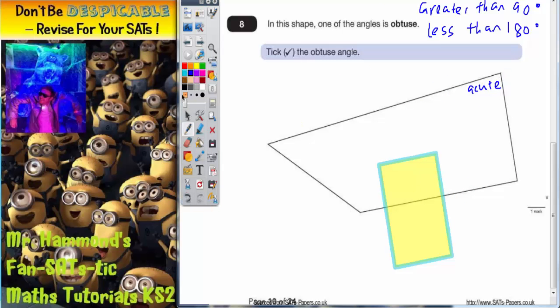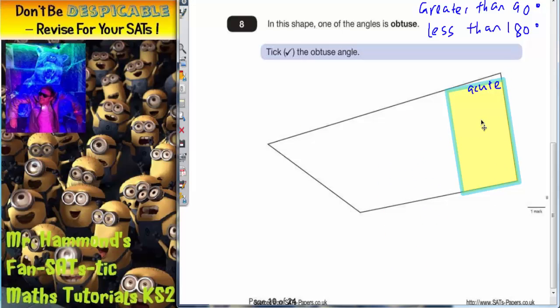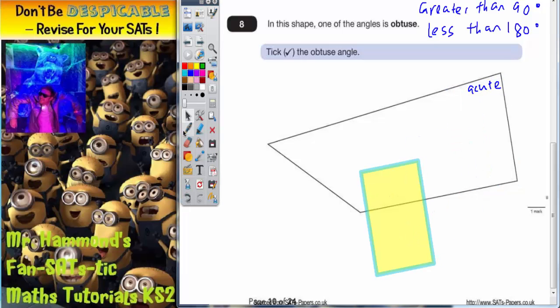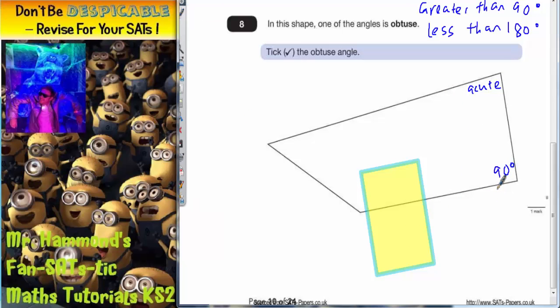Down here in the bottom right corner, we can see that the tracing paper fits exactly in this corner. If it fits exactly, then it must be 90 degrees. It must be exactly a right angle. So that one must be 90, or in other words, a right angle.